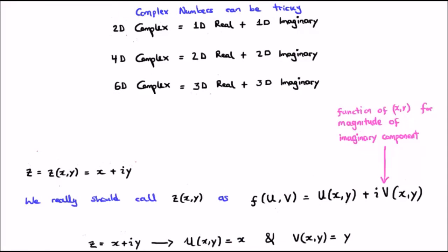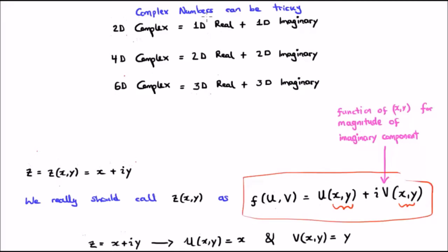Complex numbers can be rather tricky in higher dimensions. If we have a single real dimension, our complex number is 2D. But if we have three real dimensions, which happens regularly in science, engineering, and maths, we're going to have a 6D complex number. This suggests we should move away from rectangular representation and say that a complex number is represented by the function f, which is a function of a real function u and an imaginary function v, and each of those are themselves functions of the various dimensions we have. This is how we represent the 2D complex number, and it gets more involved with higher dimensions.